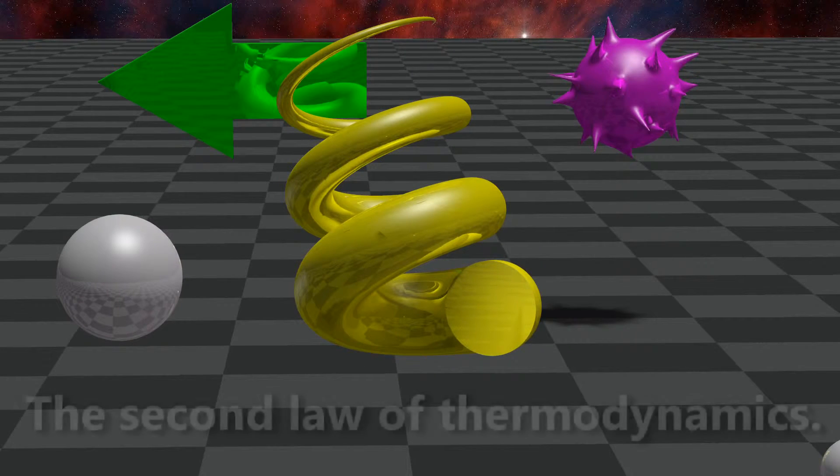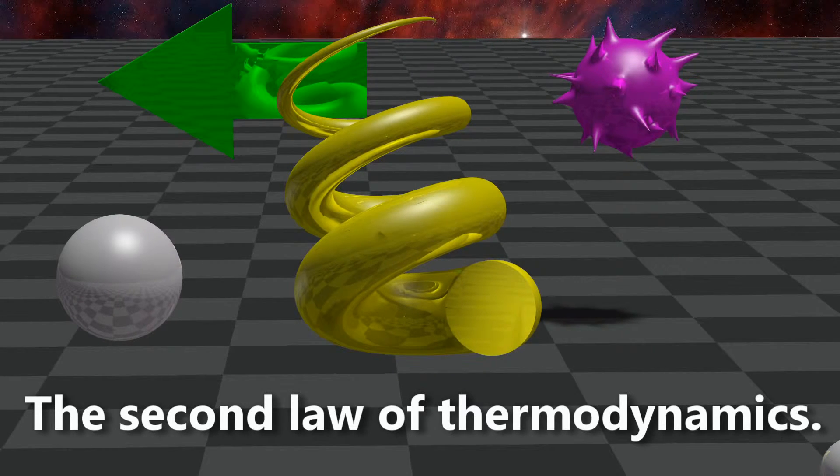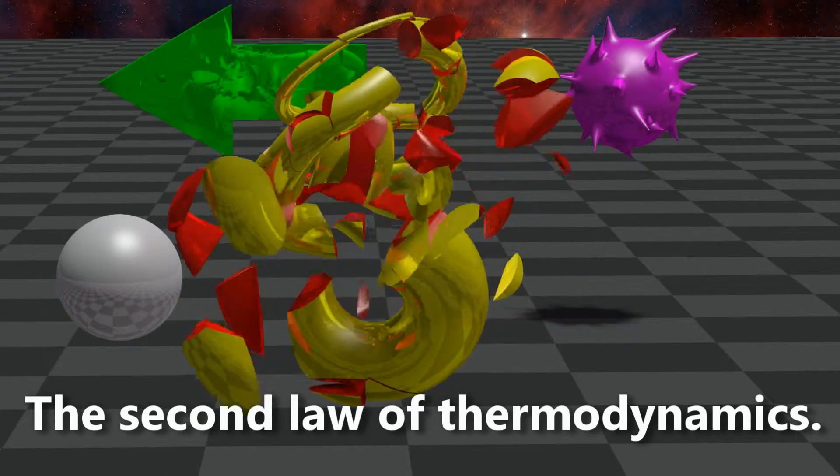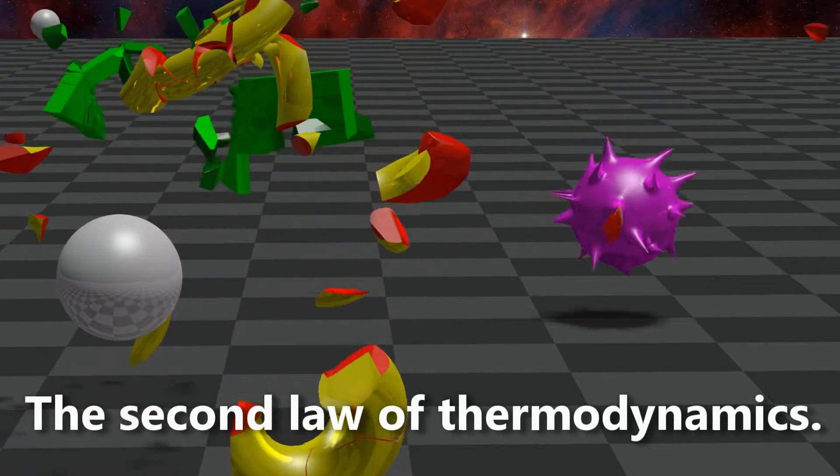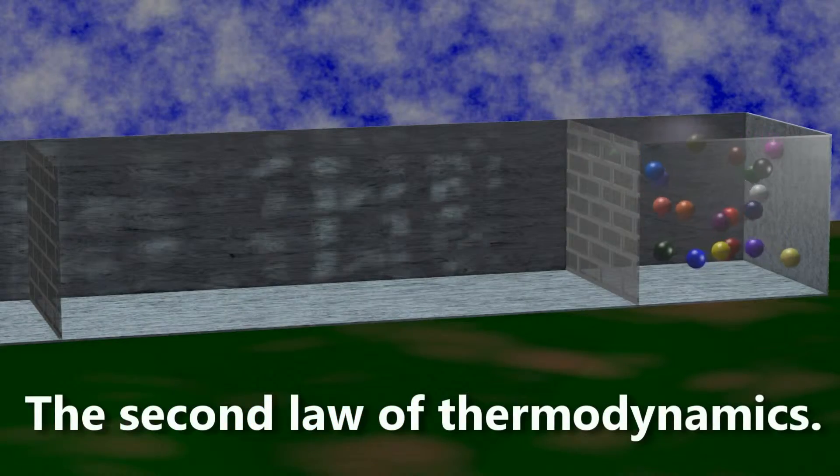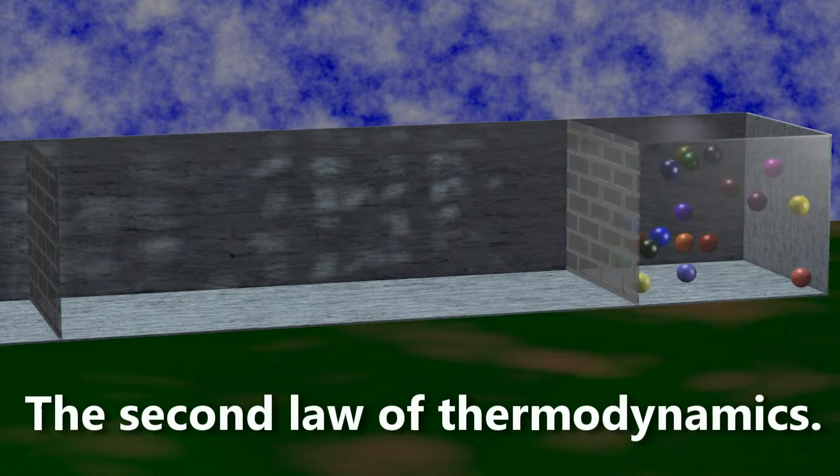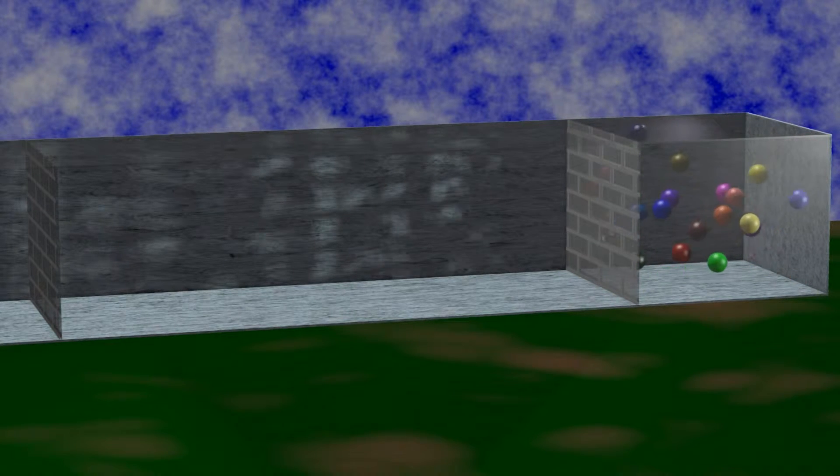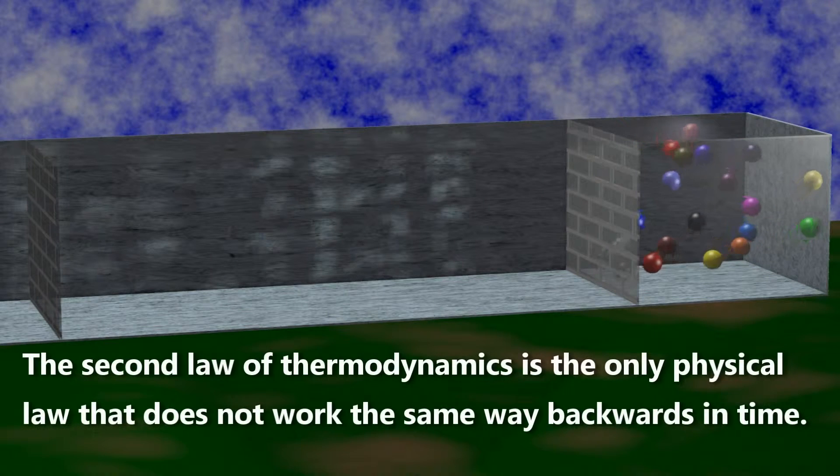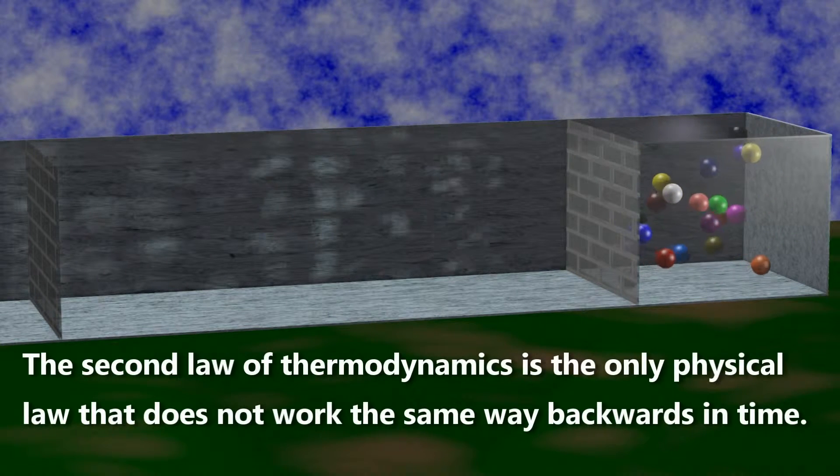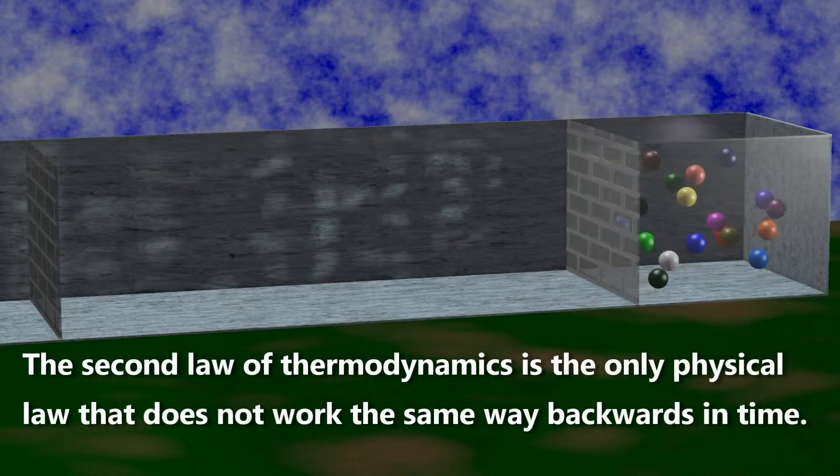There is only one reason these events never happen. The second law of thermodynamics. The second law of thermodynamics is the only physical law that does not work the same way backwards in time.